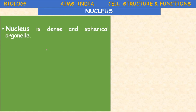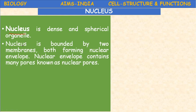Let us proceed to the next cell organelle: the nucleus. The nucleus is a dense and spherical organelle bounded by two membranes, both forming a nuclear envelope. A nuclear envelope is a double membrane layer surrounding the nucleus, found particularly in eukaryotic cells. The nuclear envelope contains many pores known as nuclear pores.